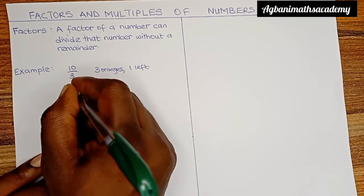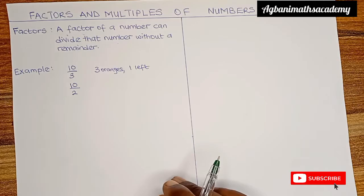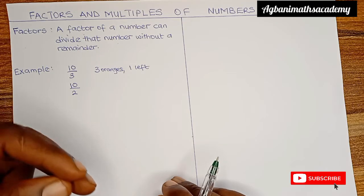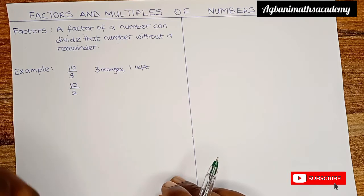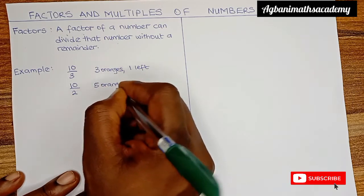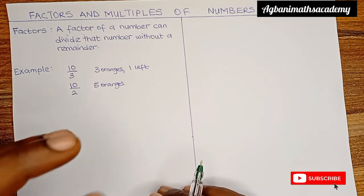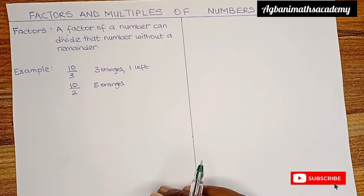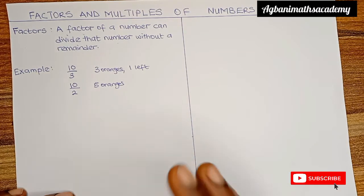What about 10 divided by 2? This means 10 oranges are being shared by 2 boys. Will there be a remainder? 2×1=2, 2×2=4, 2×3=6, 2×4=8, and 2×5=10. This means that when 2 boys share 10 oranges, each boy will have 5 oranges and nothing will be left. Because 10 divided by 2 gives you exactly 5. So the factor of a number is that number that can divide it without leaving a remainder.